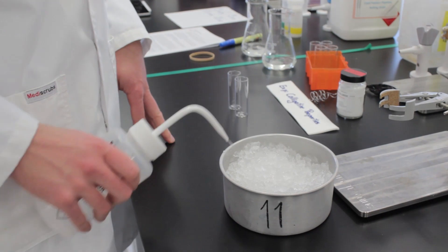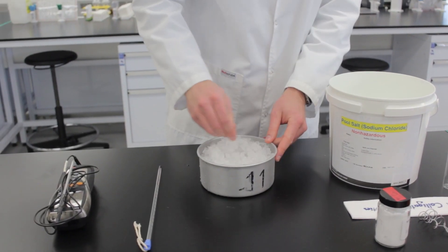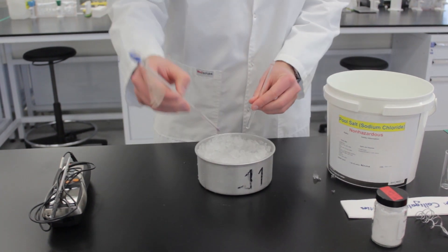To make our ice bath super cold we're going to add a few scoops of pool salt. Keep an eye on the temperature and make sure it's around negative 8 degrees throughout the experiment.